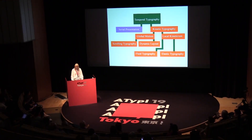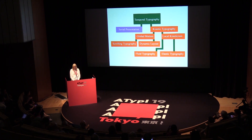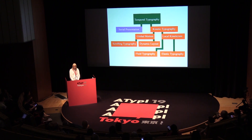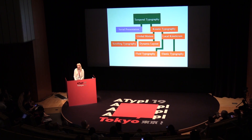Temporal typography is typography displayed on screen and it has two categories: serial presentation and kinetic typography. Serial presentation is typography displayed on screen but with no movement involved, while kinetic typography is typography displayed on screen that has movement involved.